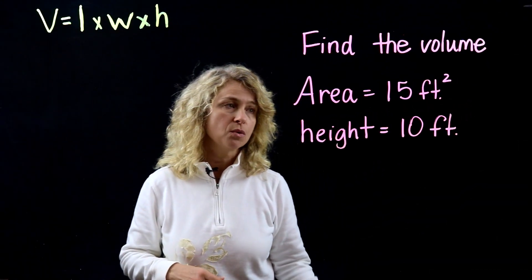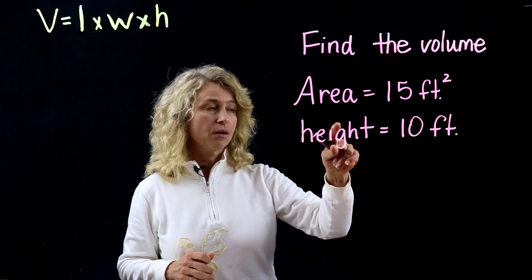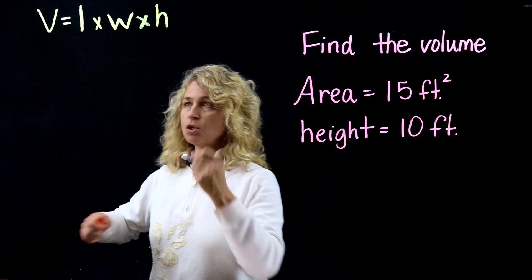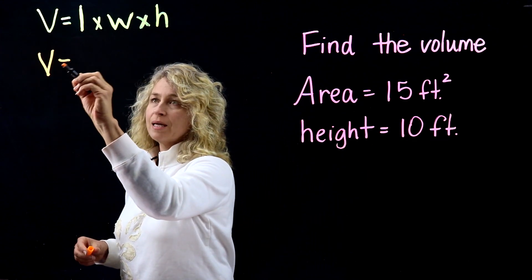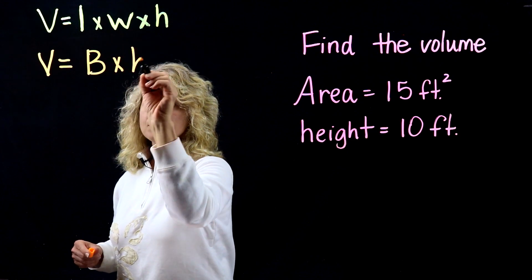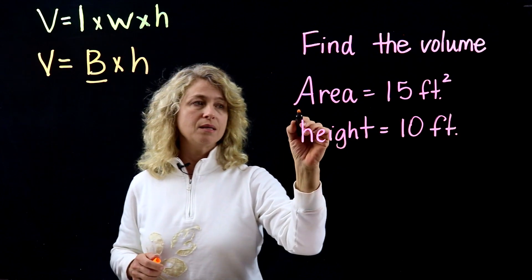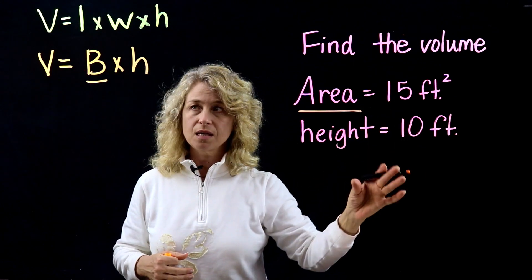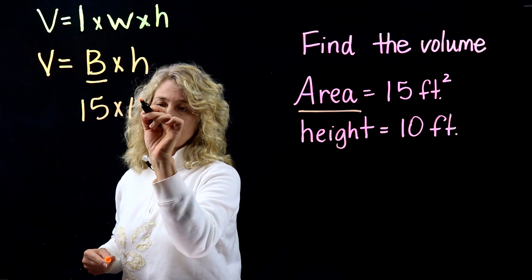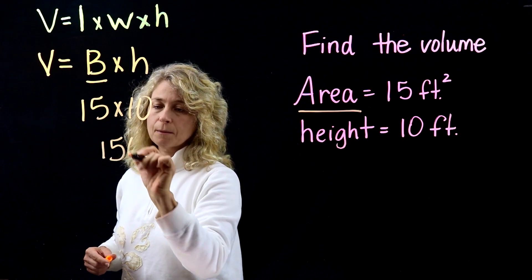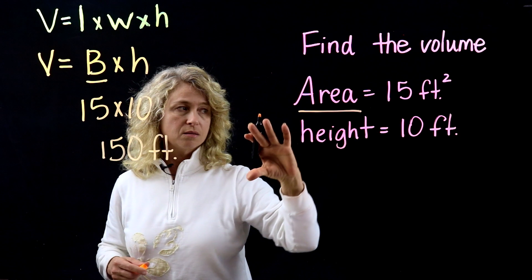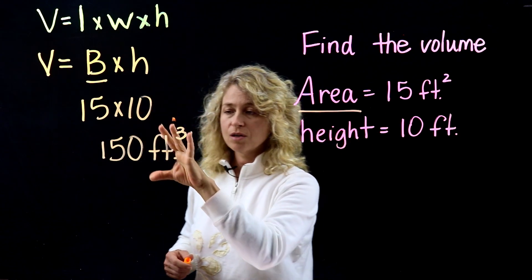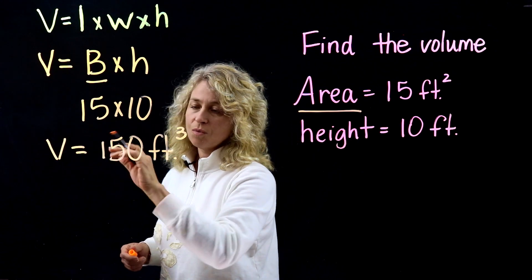Here's another example: find the volume where the area equals 15 feet squared and the height is 10 feet. Remember, base times height — base means area, they can be interchanged. So multiply 15 times 10, which is 150, and make sure you put feet cubed to represent the three dimensions. So volume equals 150 feet cubed.